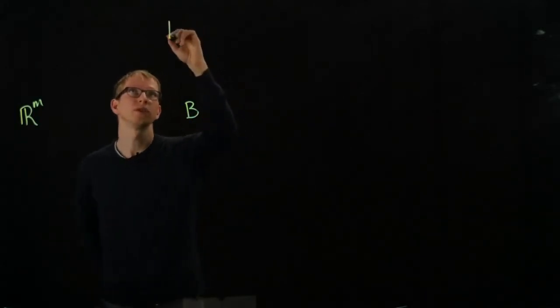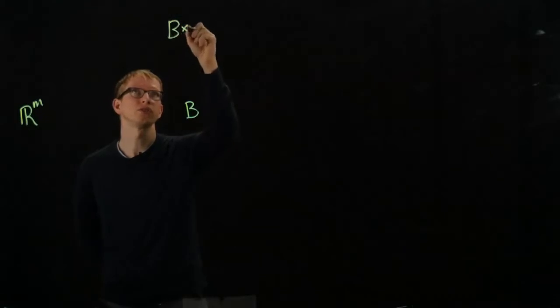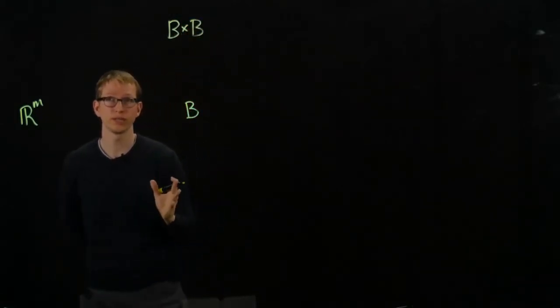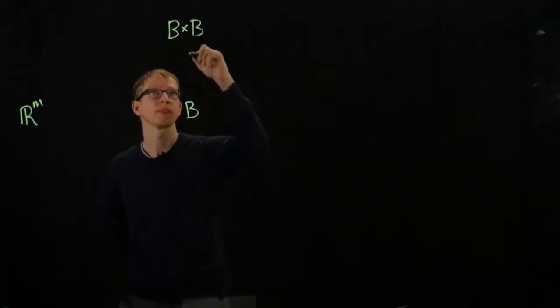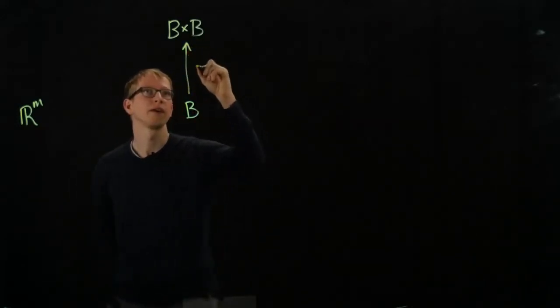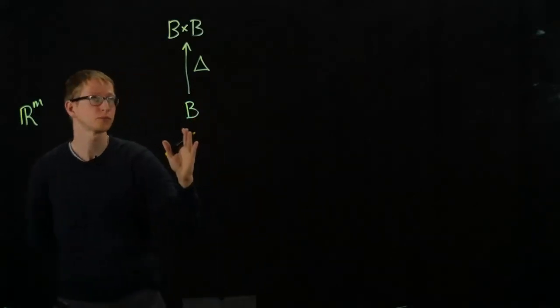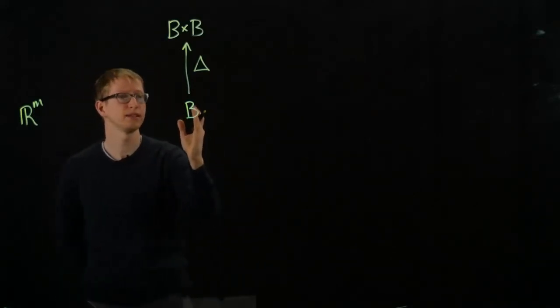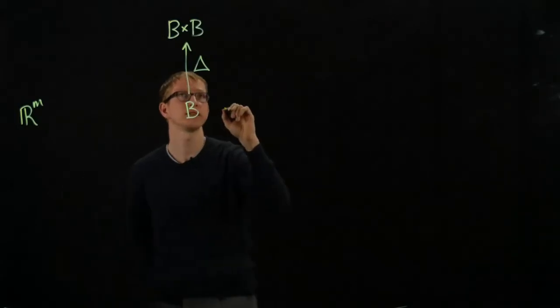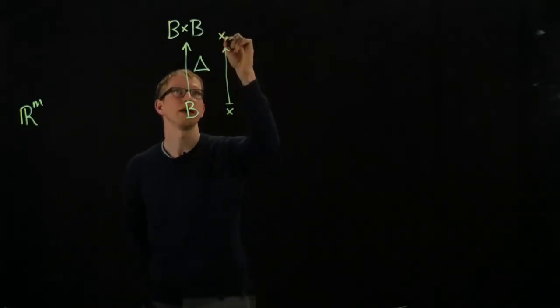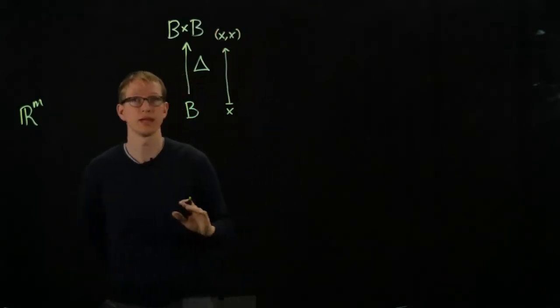So what we'll do is, there's this trick, whenever you have a variable and it's used in more than one place, you can duplicate it. And the way you duplicate it is through something known as the diagonal map. And all the diagonal map does is it takes an element in B, and it produces for you the element x, x. That's all it does.